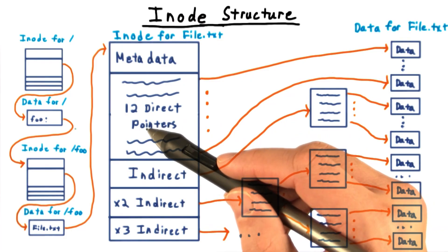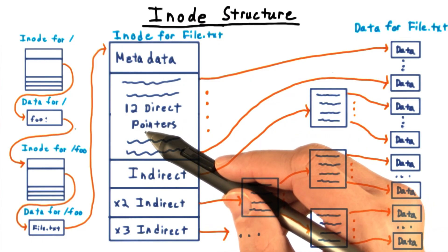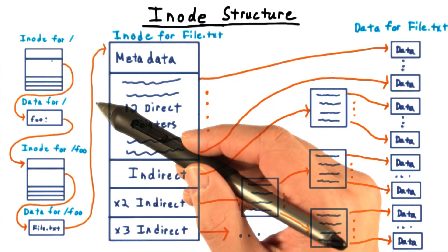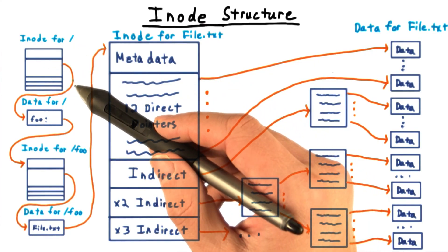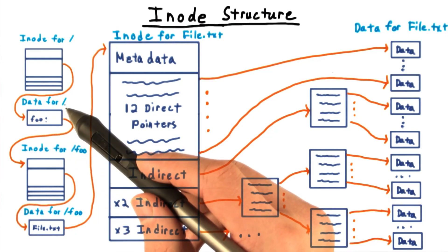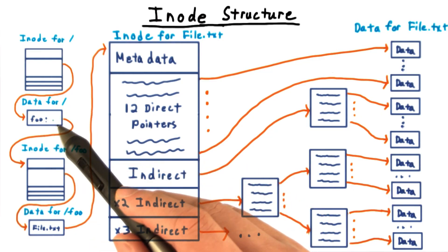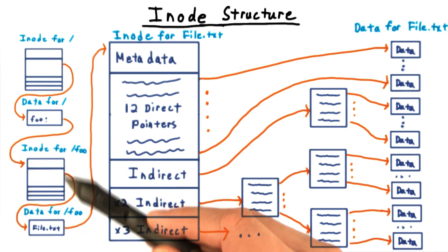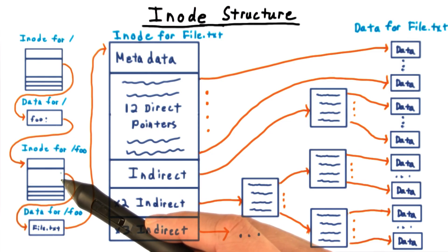The path for accessing /foo/file.txt would look something like this. We start at the inode for the root directory. And then following its data pointers, we find the data for the root directory. There we find that foo maps to another inode. Following that address, we consult that inode and find the address for its data block.